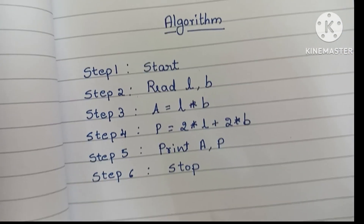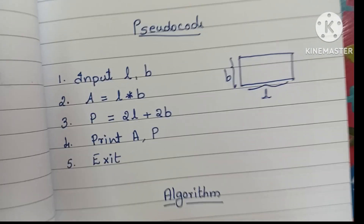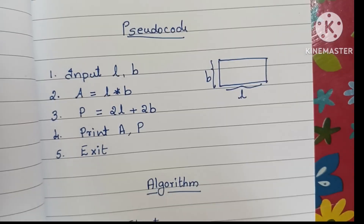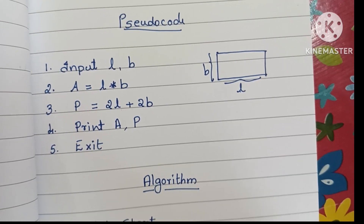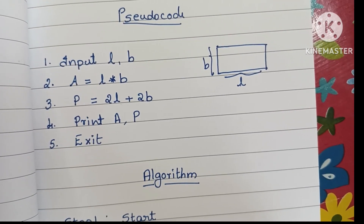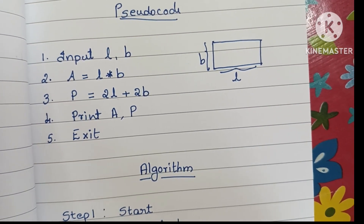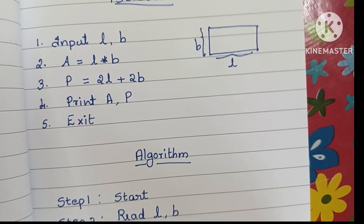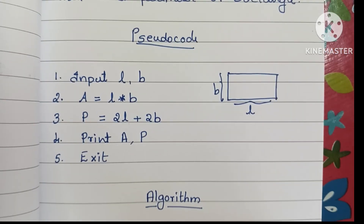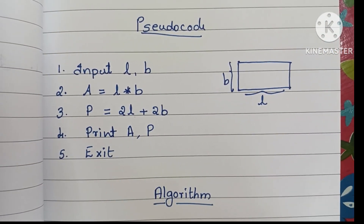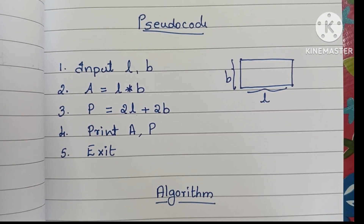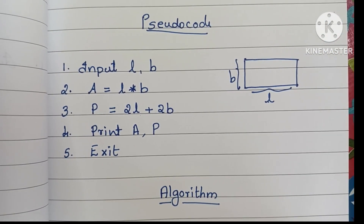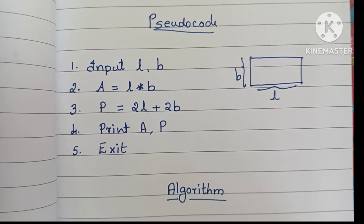So this is the algorithm and pseudocode to find the area and perimeter of a rectangle. If you like this video, please like and subscribe to the channel. Thank you for watching.